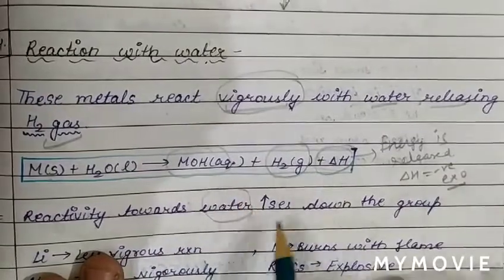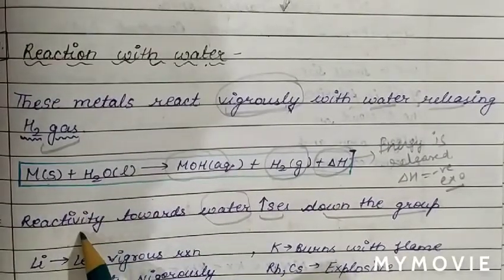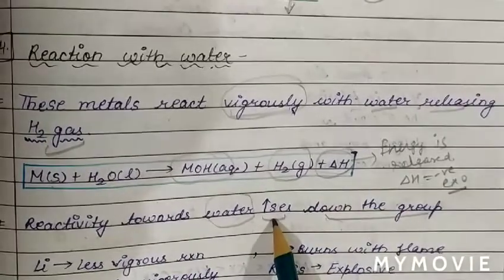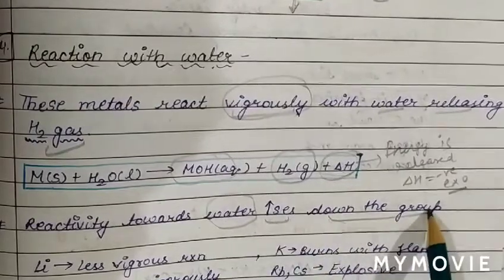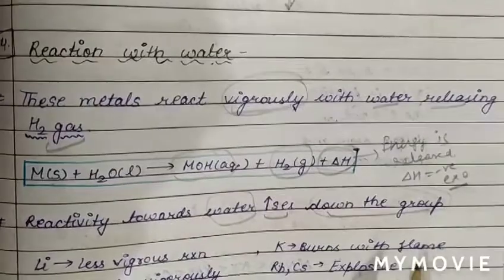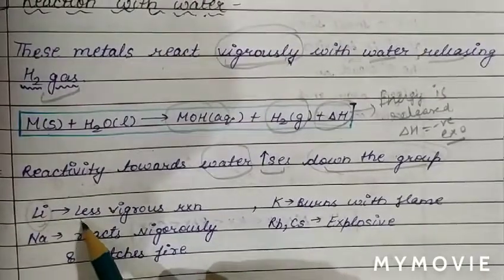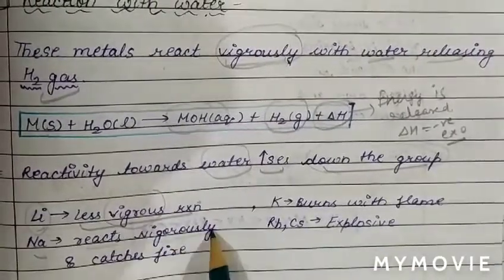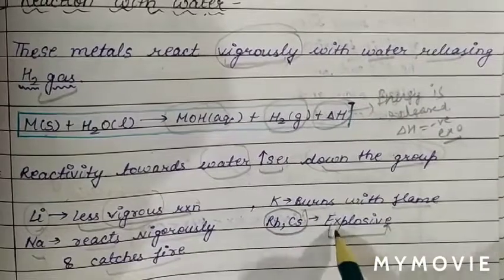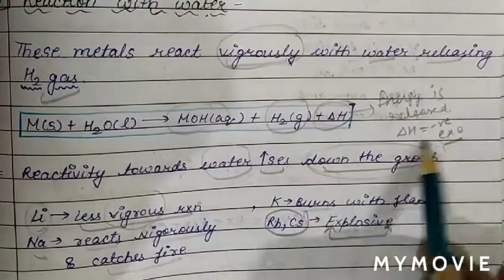The reactivity of alkali metals with water increases down the group. As we move from lithium to cesium, reactivity towards water increases. Lithium has less reactivity towards water, while cesium has the most reactivity. Lithium gives a less vigorous reaction with water, sodium reacts violently and catches fire, potassium burns with a flame, while rubidium and cesium react explosively with water.